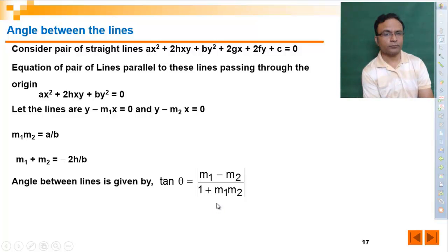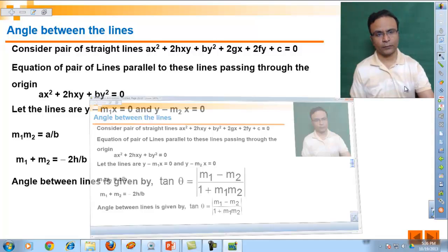Now tell me how we can use these values m1m2 and m1 plus m2. Here we have m1 minus m2. In quadratics where we have sum of roots and product of roots, how do you write m1 minus m2? m1 minus m2 will be square root of m1 plus m2 square minus 4m1m2.